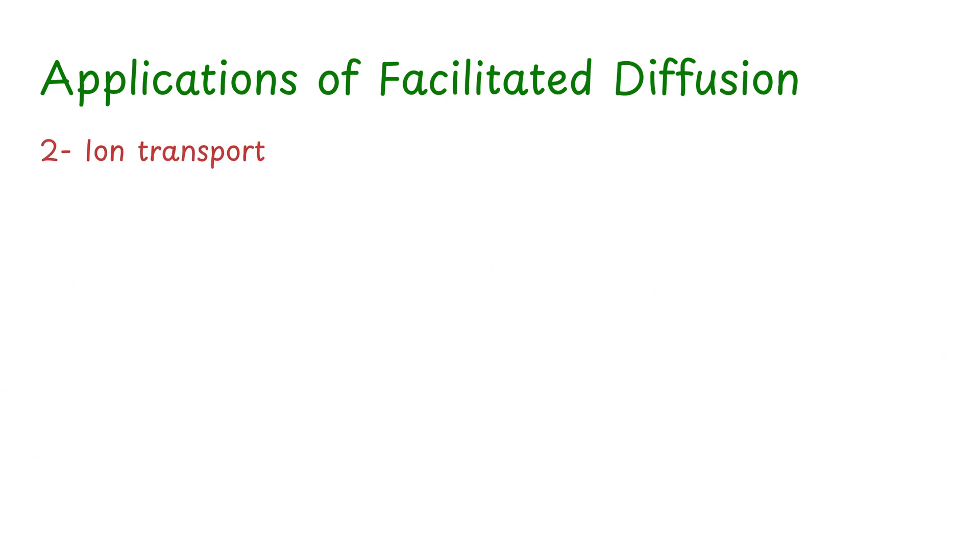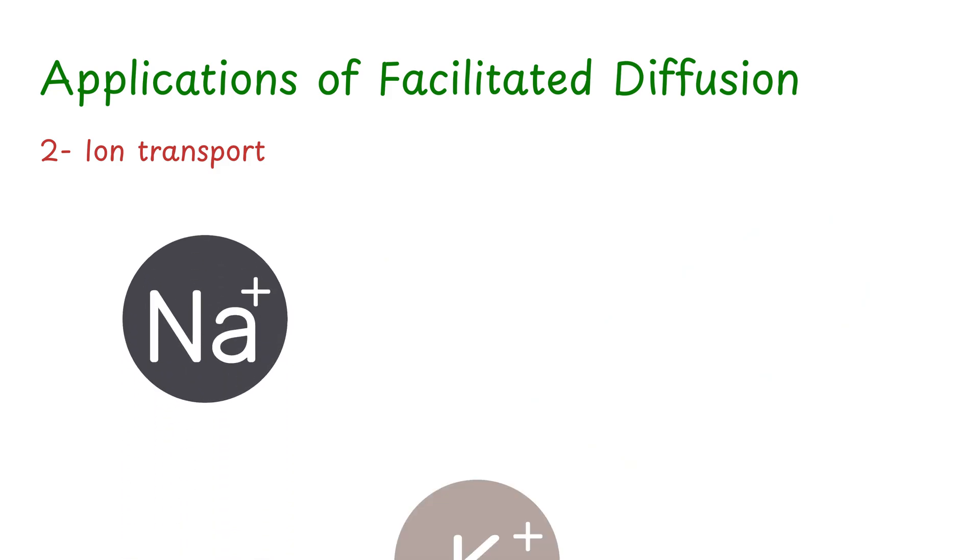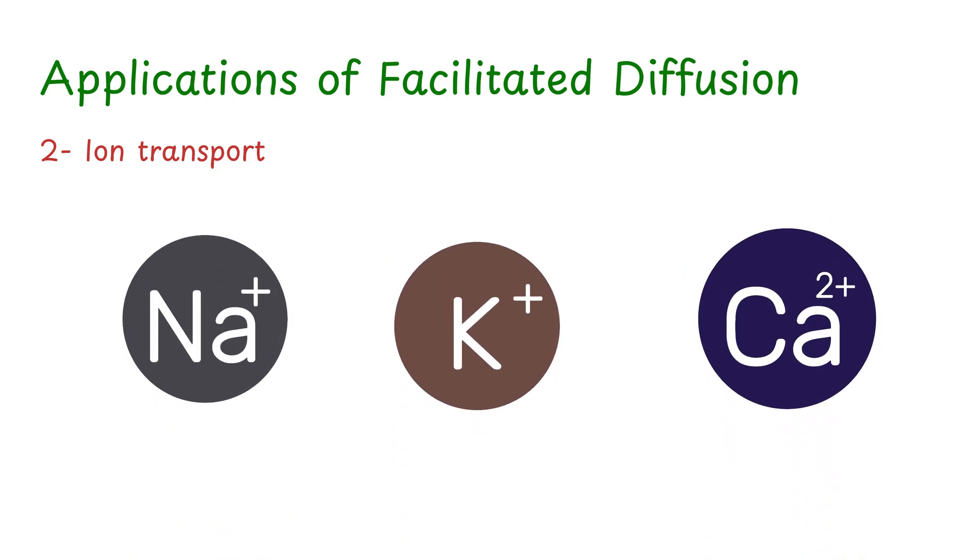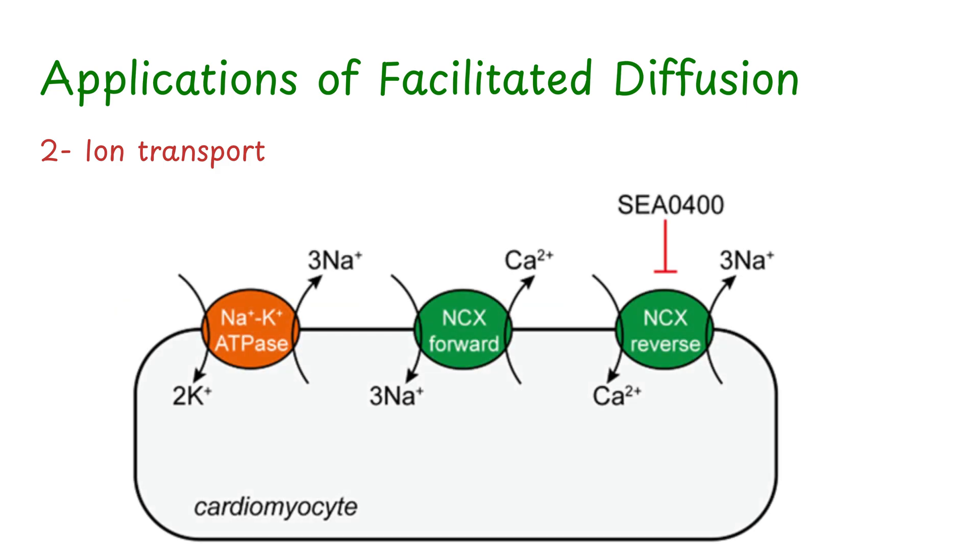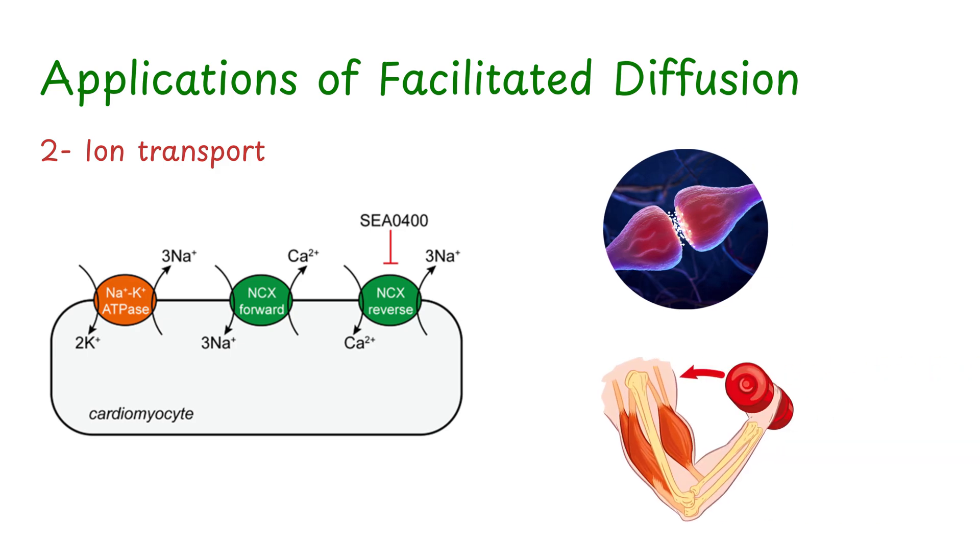Next example is ion transport in nerve and muscle cells. Ions like sodium, potassium, and calcium can't pass through the membrane freely because they're charged. Facilitated diffusion helps move these ions through channel proteins, allowing nerve signals and muscle contractions to occur.